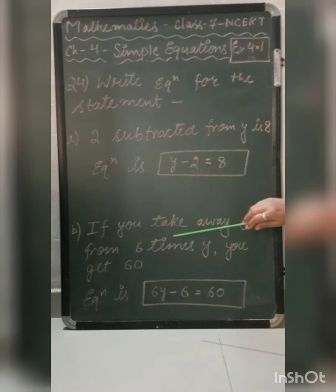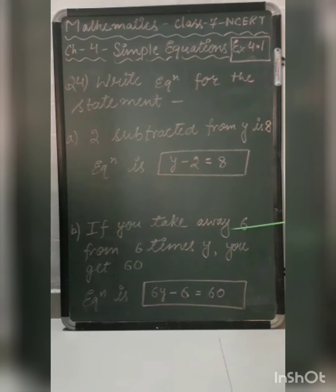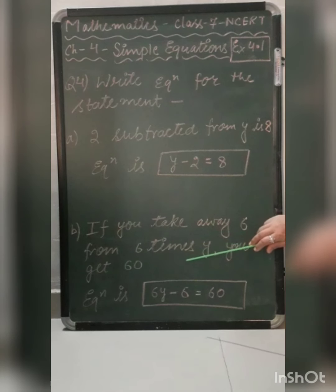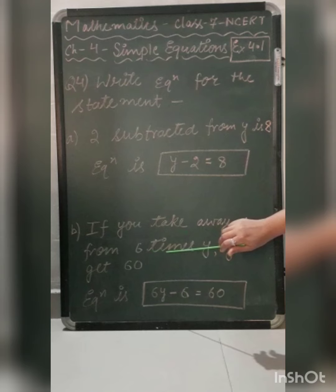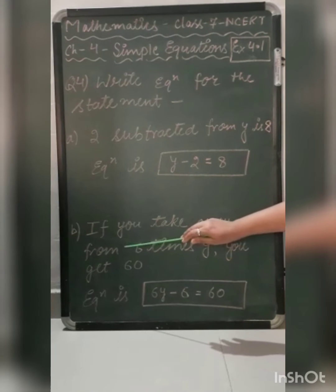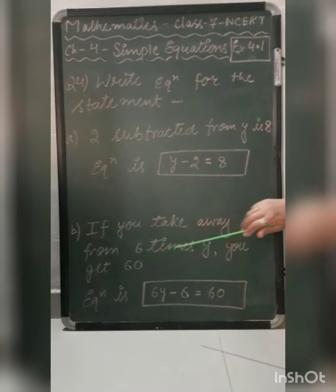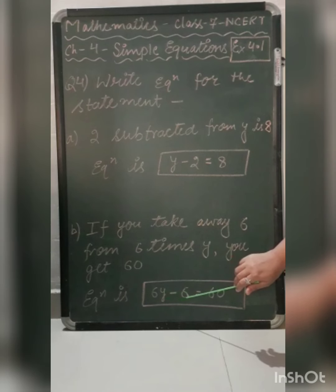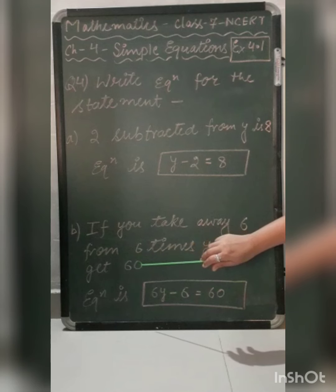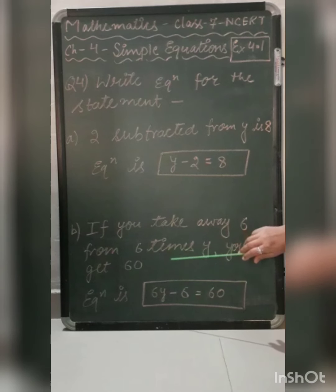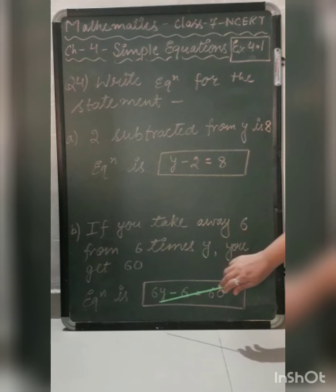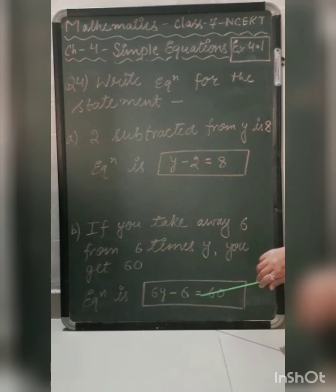The next statement is: if you take away 6 from 6 times y, you get 60. Here, take away means minus, and 6 times y means 6y. Since 6 is taken away from 6y, we write 6y minus 6. You get 60 means equal to 60. So the equation for this statement is: 6y minus 6 equal to 60.